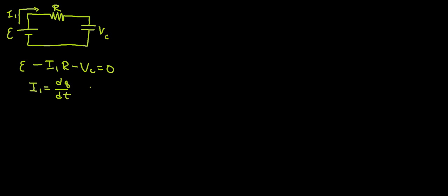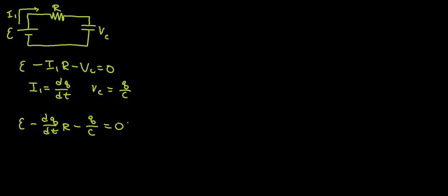We know V_C is going to be equal to Q over C. So plugging this into your initial Kirchhoff's loop, we get the differential equation: epsilon minus dQ/dt times R minus Q over C equals 0.